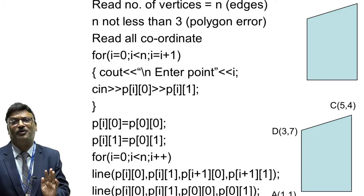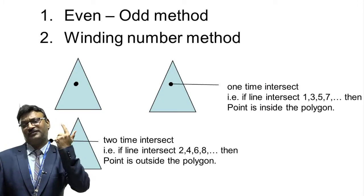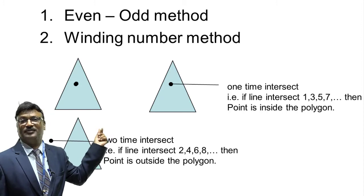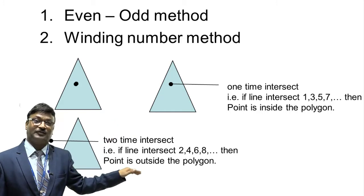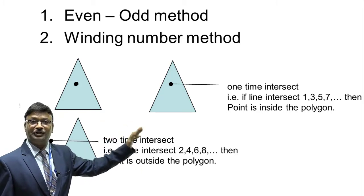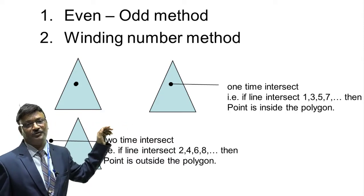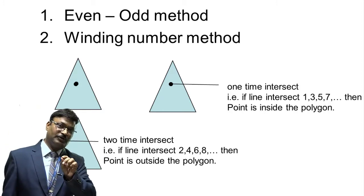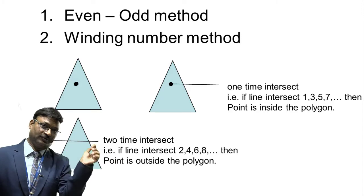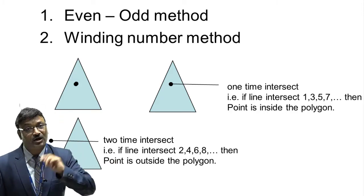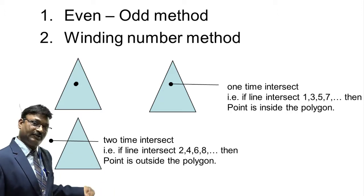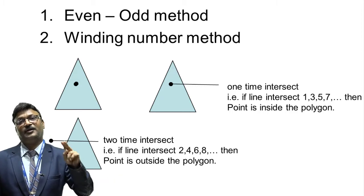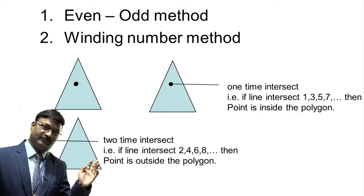There are two methods to find inside and outside points of a polygon: the even-odd method and the winding number method. In the even-odd method, consider any inside point and draw a straight line. If that line intersects 1, 3, or 5 edges — odd numbers — that point is inside the polygon. If the intersection count is even, such as 2 (entering and exiting edge), that point is outside the polygon.